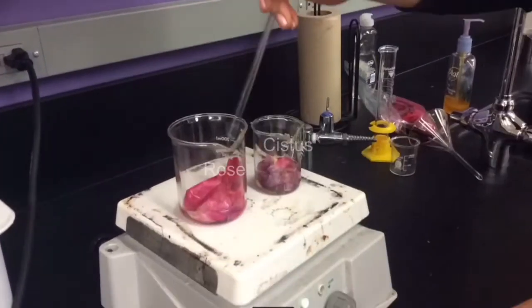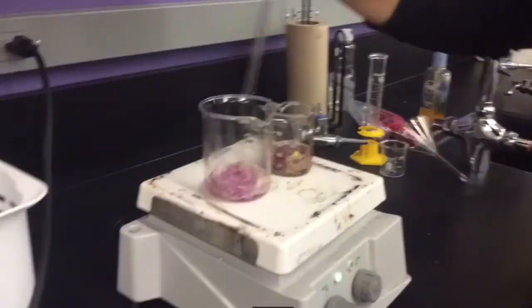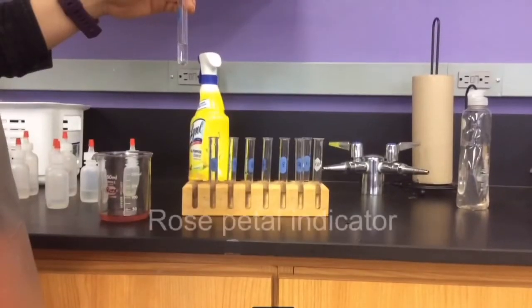Put 12 petals of each of the flowers in the ethanol and heat on hot plate, mixing occasionally. When the petals lose their color around seven minutes, remove the beaker and take out the petals.